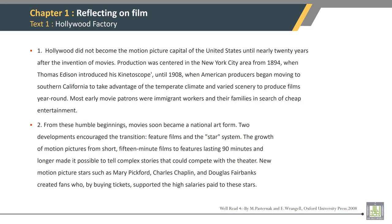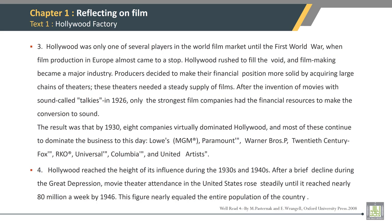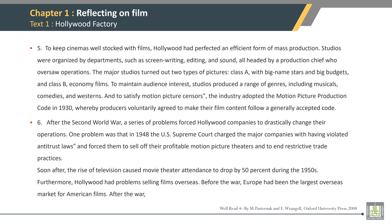The fourth sentence of paragraph 2: From these humble beginnings, movies soon became a national art form. The fourth sentence of paragraph 3: Hollywood was only one of several players in the world film market until the First World War, when film production in Europe almost came to a stop. The fourth sentence of paragraph 4: Hollywood reached the height of its influence during the 1930s and 1940s. The fourth sentence of paragraph 5: To keep cinemas well stocked with films, Hollywood had perfected an efficient form of mass production.